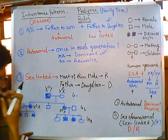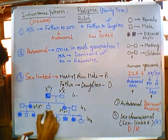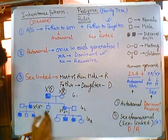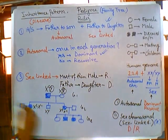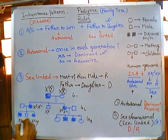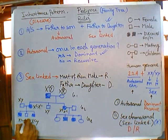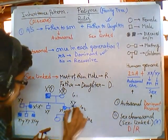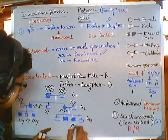It must be X-linked dominant. This individual is XY. The X carries the dominant allele. So from this cross, one daughter is getting it and one son is getting it — the son must have inherited this X. So this is XY affected, and this is normal XY.